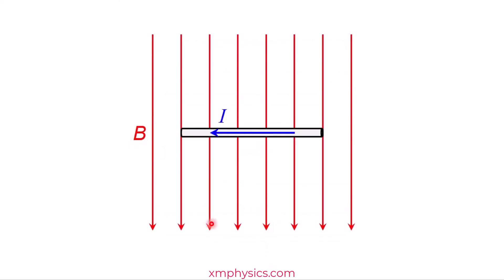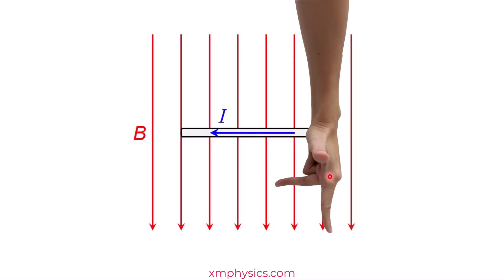Let's try one more. The magnetic field is downward and the current is leftward. What's the direction of the magnetic force? Point your index finger in the direction of the magnetic field, then rotate your hand until your middle finger is pointing leftward. The thumb is pointing out of the screen. So the magnetic force experienced by this conductor is pointing out of the screen.